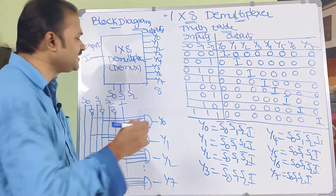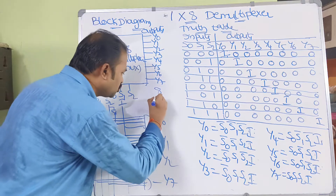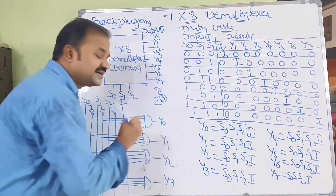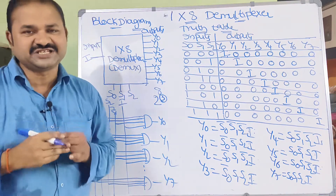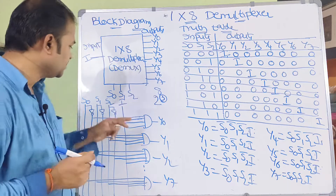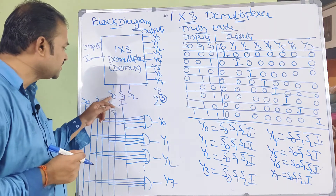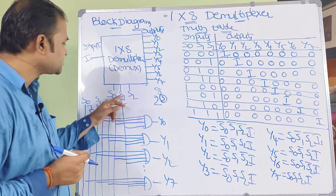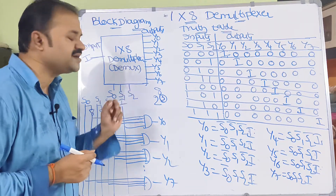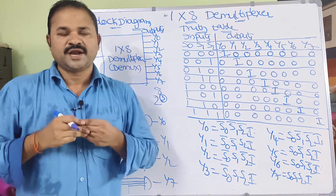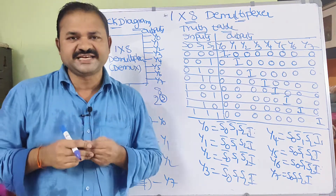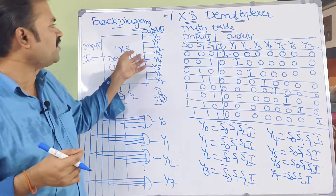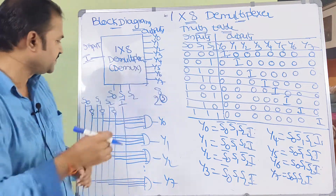We can write 8 as 2 power 3, so totally we require 3 selection lines. The selection inputs are S0, S1, and S2. Now let us see the working of the 1 by 8 demultiplexer.